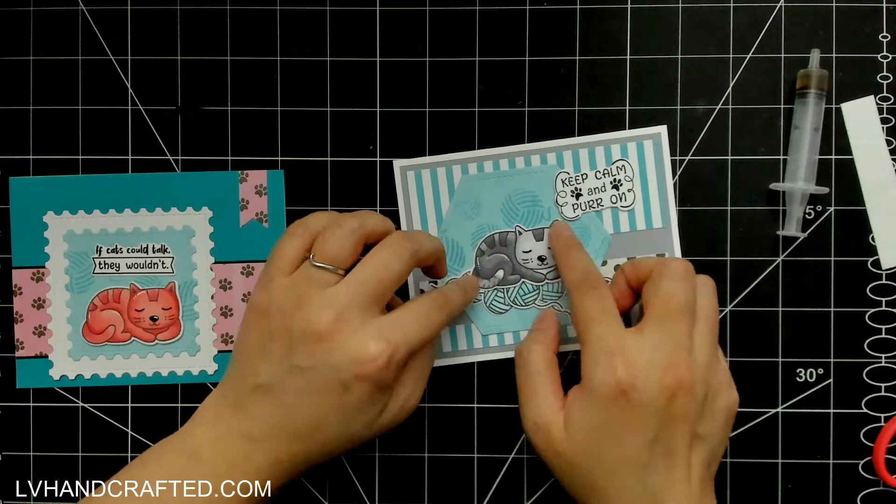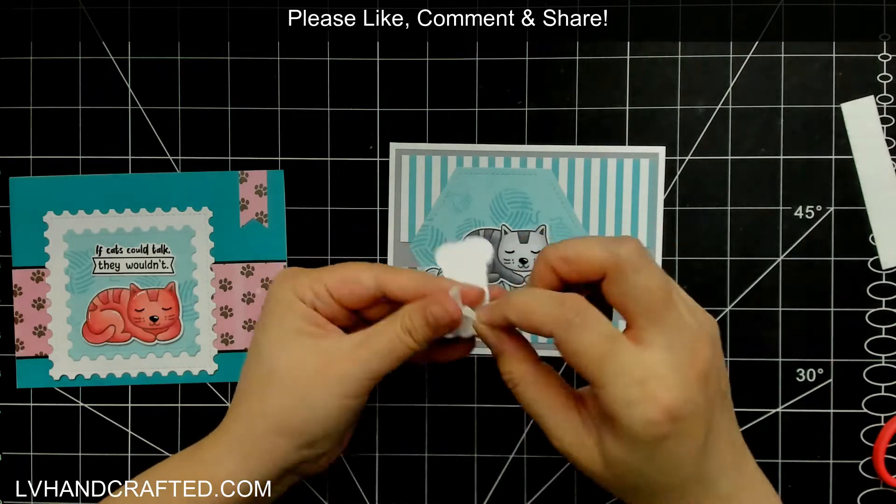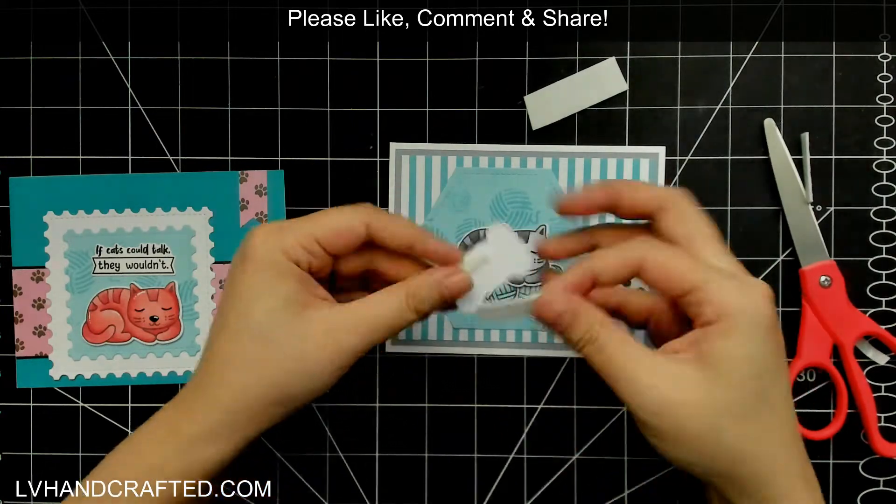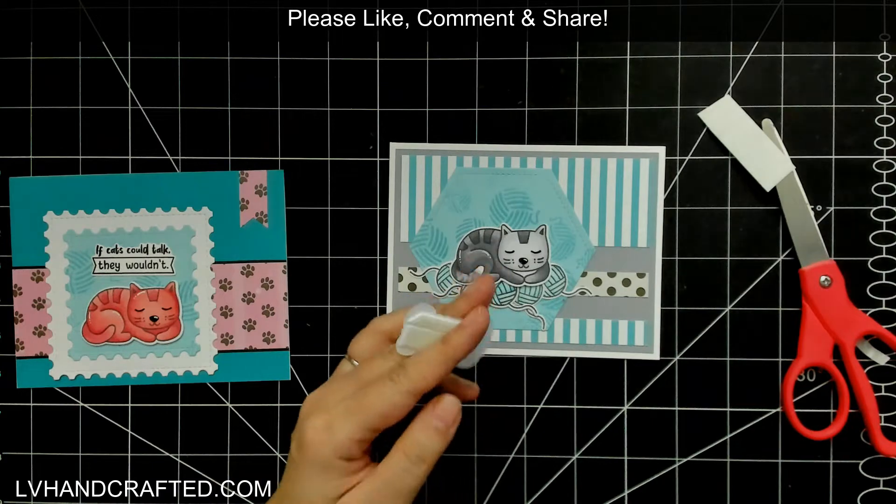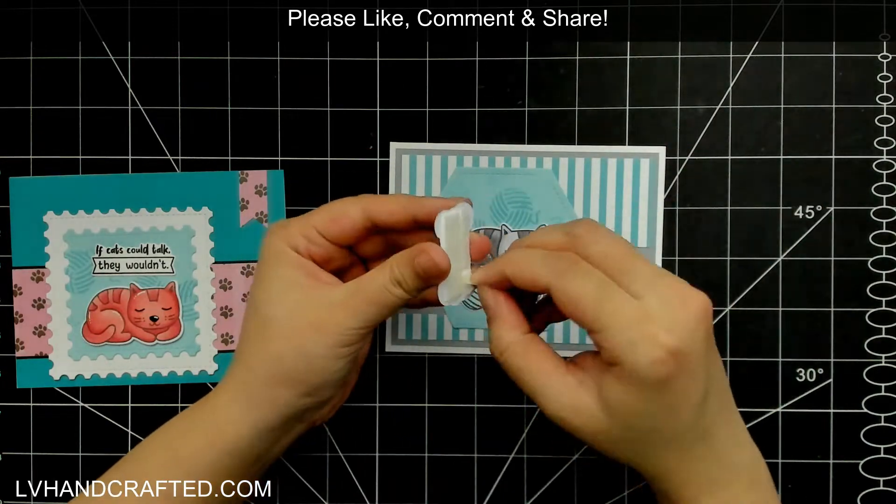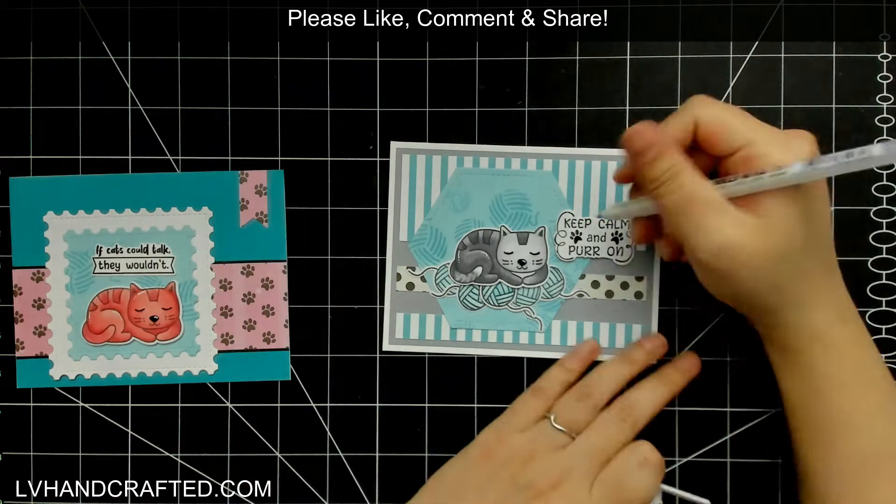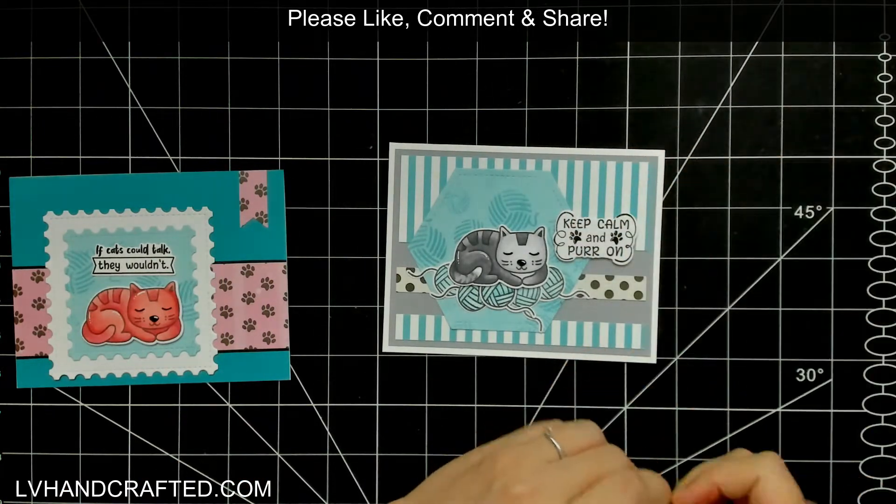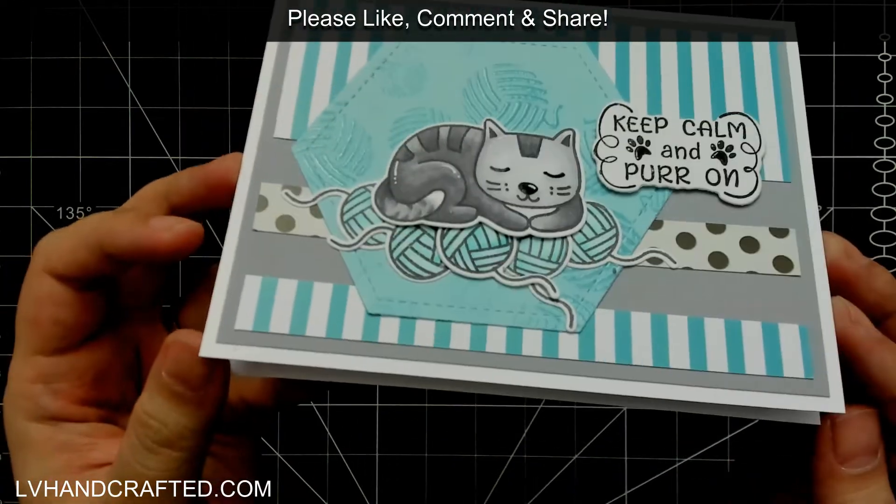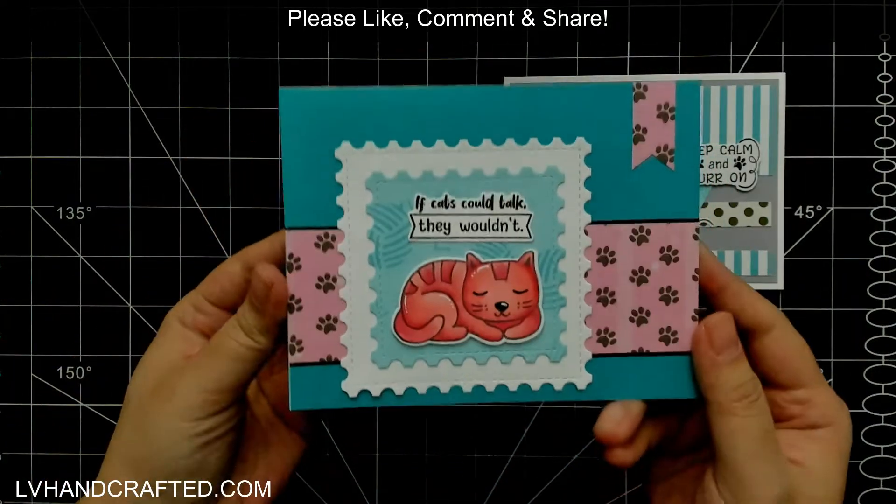The sentiments in the Possum Cat sentiment stamp set are all so funny. I love the one on the left - it says 'If cats could talk they wouldn't' - and it's so true. They are so independent and they really just can't be bothered sometimes. And then this one's super cute - 'Keep calm and purr on.' I did add a little bit of white gel pen highlights to my colored in stamped images, so I just added a couple of the same white gel highlights to the paw prints that are part of the sentiment as well.